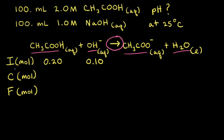Instead of an ICE table, we use an ICF table, where I is the initial amount of moles, C is the change in moles, and F is the final amount of moles. We've already calculated the initial moles of acetic acid to be 0.20 and the initial moles of hydroxide anions to be 0.10. If we assume the reaction hasn't happened yet, the initial moles of acetate would be 0.